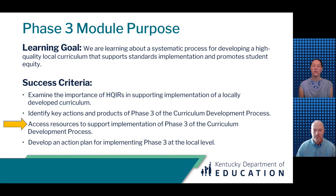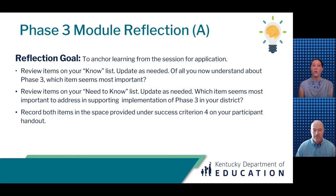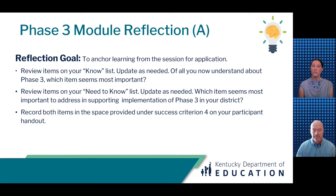We are moving into our last success criterion where we want to provide you time to begin to develop an action plan for implementing Phase 3 at the local level. Before thinking through your action plan, we want to pause for a final reflection to anchor your learning from the session. Go back to your no-need-to-know table on page one of your participant handout. First, review the items on your know list and update as needed — which item seems most important for you to remember? Then review the items on your need-to-know list, update as needed, and determine which item seems most important to address in supporting implementation of Phase 3 in your district. Record both of those items in the space provided under Success Criterion 4 on your participant handout. Pause the video and restart after completing this portion of the final reflection.